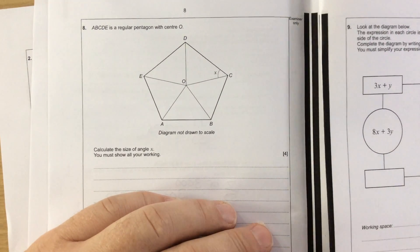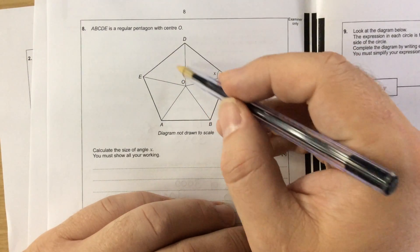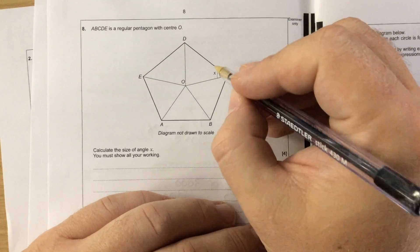Question 8. A, B, C, D is a regular pentagon with centre O. There's two ways you can do this.